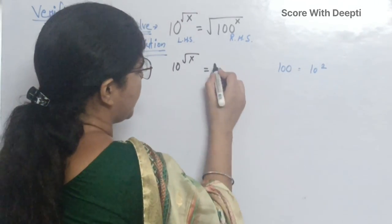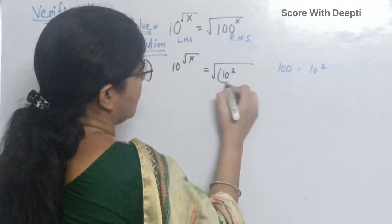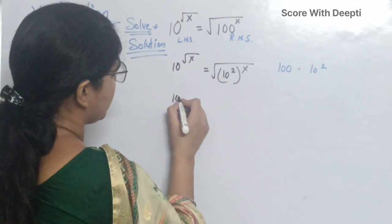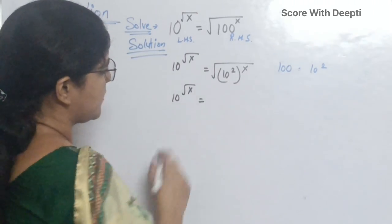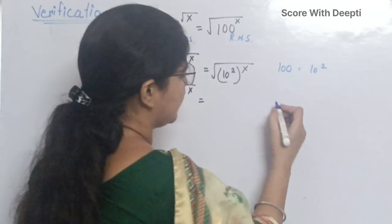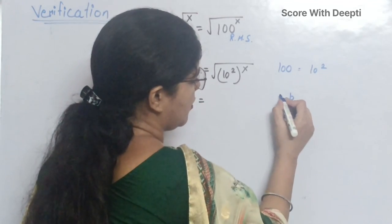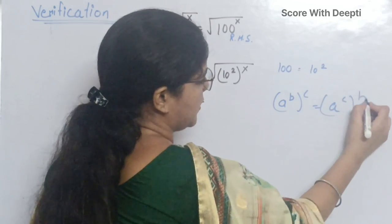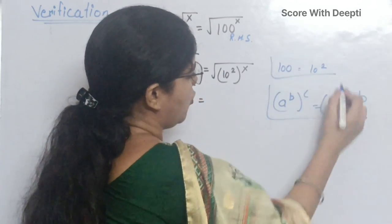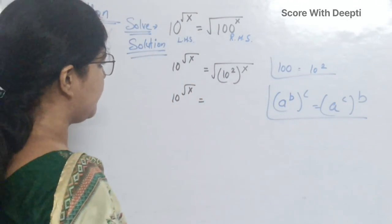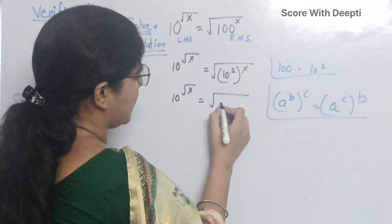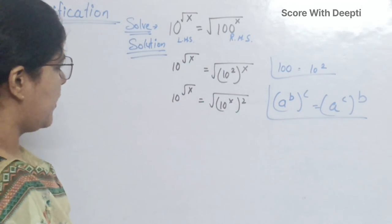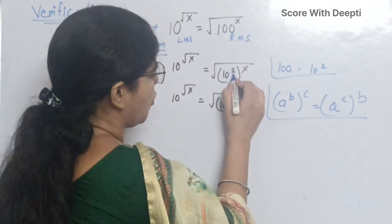In place of 100, we write 10 squared. Next, we write 10 raised to power square root x as it is. We know that a raised to power b, whole power c, is equal to a raised to power c whole power b. Now, in place of this, we write square root of 10 raised to power x, whole power 2. Here, we exchange the position of the exponents.